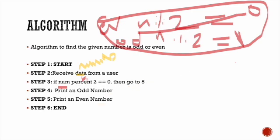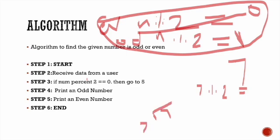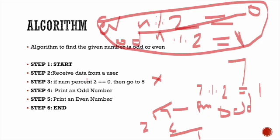Now this is an example where our input is 7. The second step: data from user is 7 and number is number 2. In the third step, if number percentage 2 is equal to 0 — that means 7 mod 2 is equal to 0? Check here: 7 mod 2 gives reminder 1, so the answer is 1. This step is not equal to zero, so it is executed as odd. The next step is to print the odd number, which is the output.